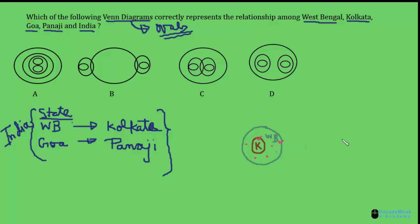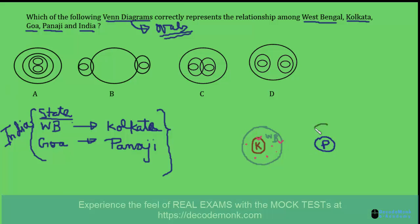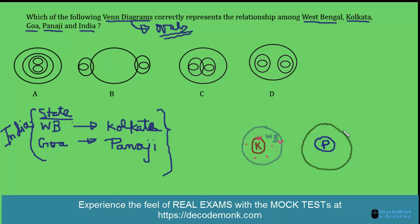Similarly, we can have another circle representing Panaji inside another circle representing Goa. There are other places inside Goa like Mudgaon, Kalingut Beach, and Kolwa Beach — these are places in Goa other than Panaji, and they may also be represented by some circles.